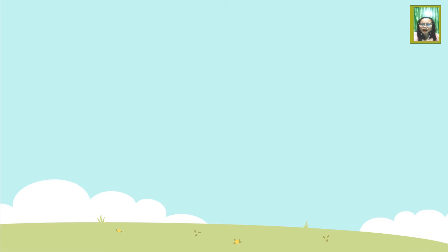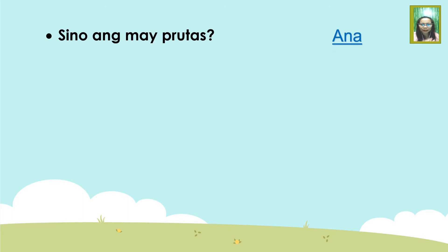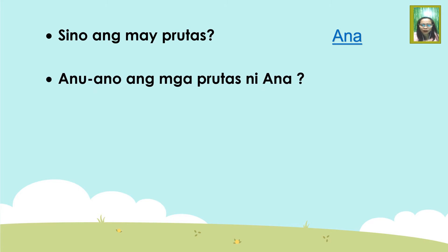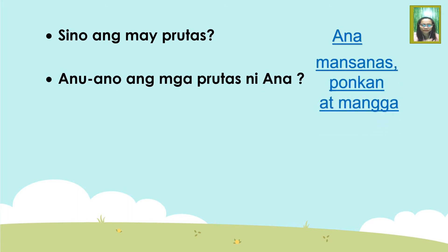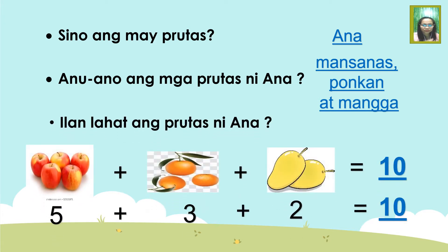Narito naman ang ilan sa mga tanong tungkol sa sitwasyon. Sino ang may prutas? Tama, ito ay si Anna. Ano-ano ang mga prutas ni Anna? Magaling, ito ay ang mga mansanas, ponkan, at mangga. Ilan lahat ang prutas ni Anna? Tama, ito ay sampo.